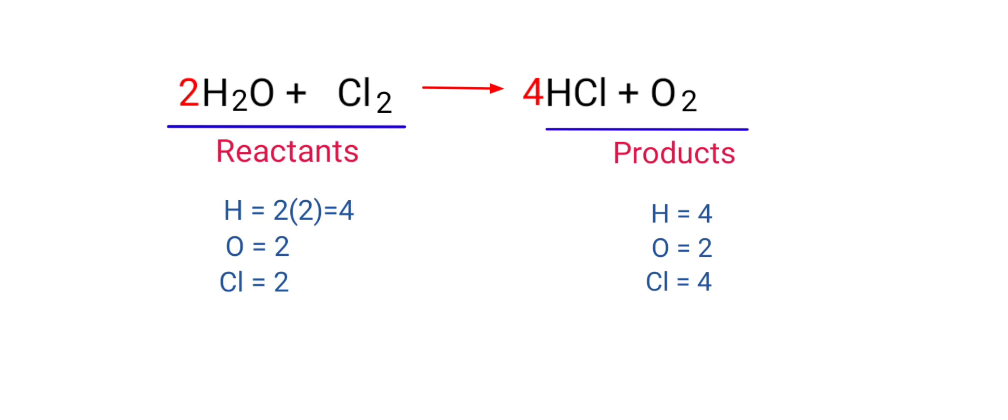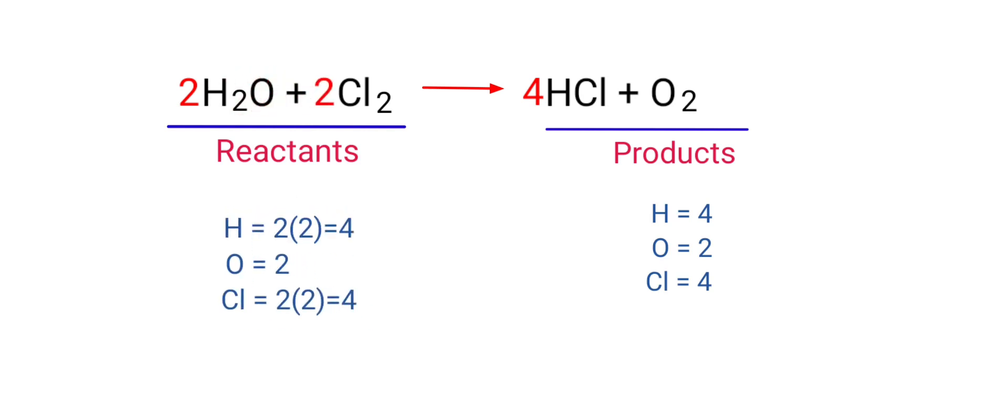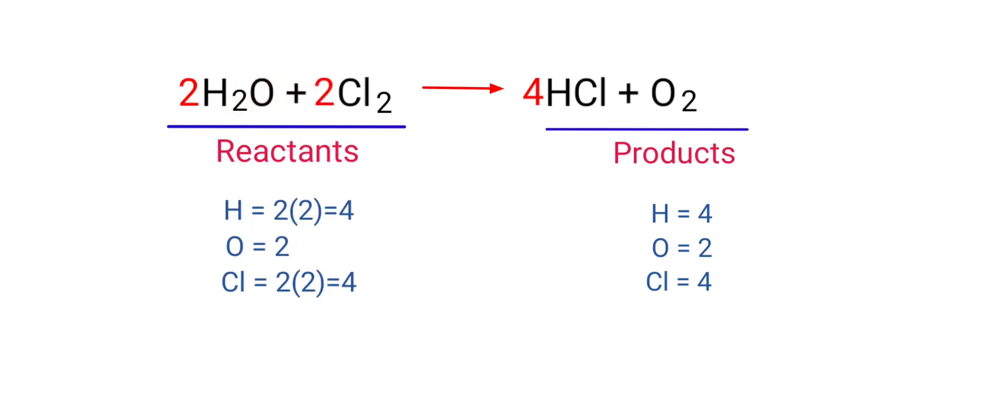Now we need to balance the chlorine atoms. To do this, we need to put a coefficient of 2 in front of Cl₂. The equation is now balanced. There are 4 hydrogen atoms, 2 oxygen atoms, and 4 chlorine atoms on both sides.